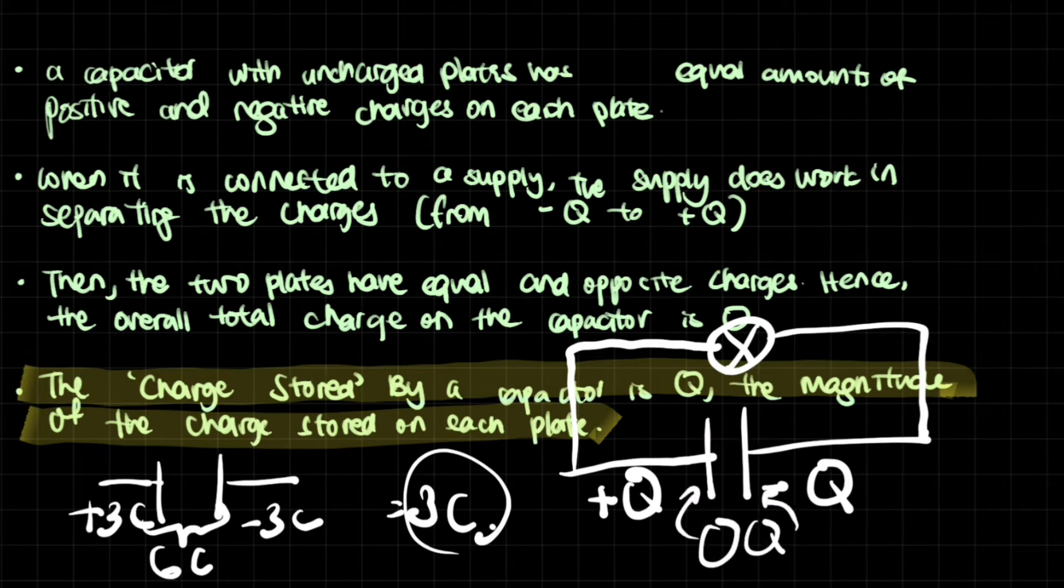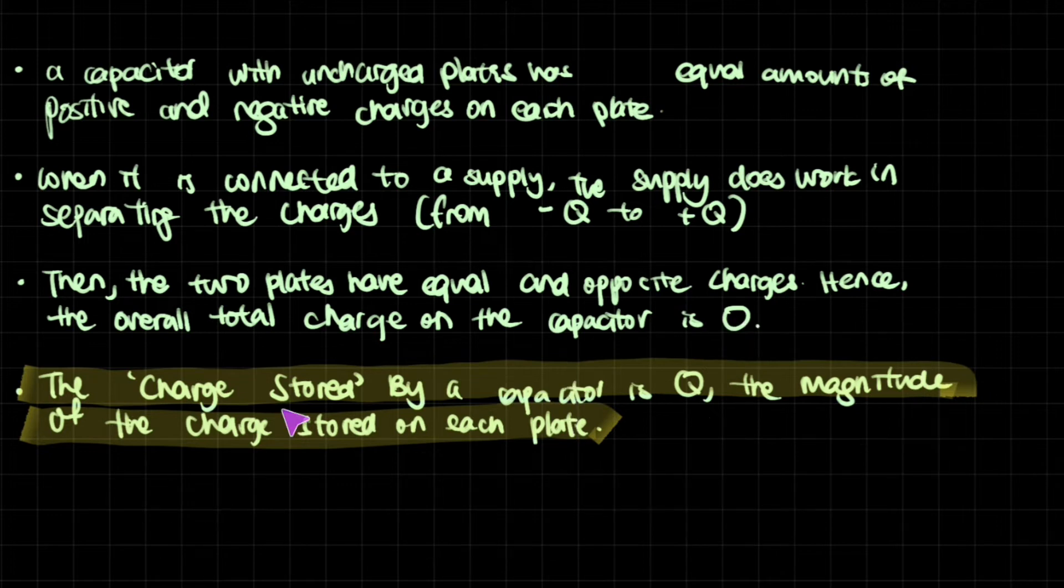In order to reach zero Q, this has to increase by Q. This has to decrease by Q. So overall, the charge that flows to get through this to this common point is actually just Q. And that's the reason why we say that the charge stored by a capacitor is Q, the magnitude of the charge stored on each plate. And don't look at the difference between the two plates or something like that.